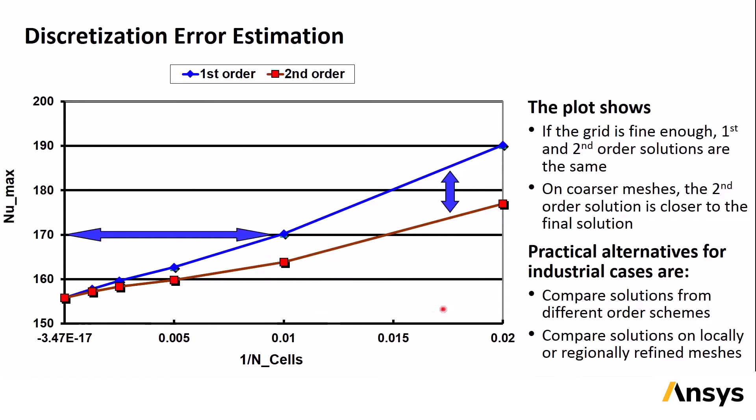Obviously, as meshes for CFD regularly have cell counts in the millions, it's not practical to create five different meshes for every problem. However, we do still want to check that there is a low level of discretization error, so typical alternatives include comparing first- and second-order solutions, and also comparing solutions where grid refinement has been performed in at least some regions of the mesh.